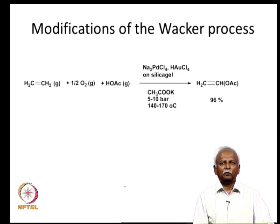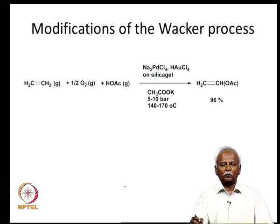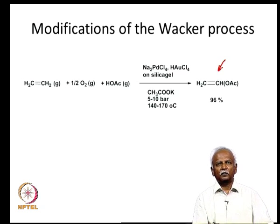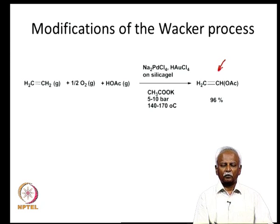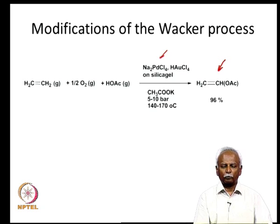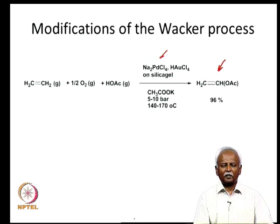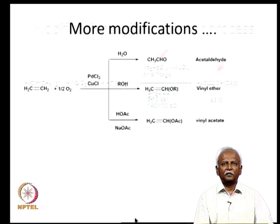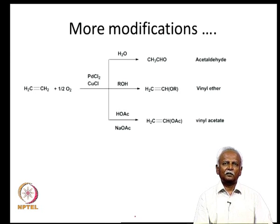Let us look at some modifications of the Wacker process. If you use acetic acid instead of water, you generate vinyl acetate instead of OH on the enol, which is also extremely useful. This reaction proceeds best with sodium tetrachloropalladate and is promoted by gold. These reactions are still used on an industrial scale to generate vinyl acetate. You can also generate vinyl ether if you do the reaction in the presence of ROH. So essentially there is addition of a nucleophile — RO⁻ or OAc⁻ — to the double bond.